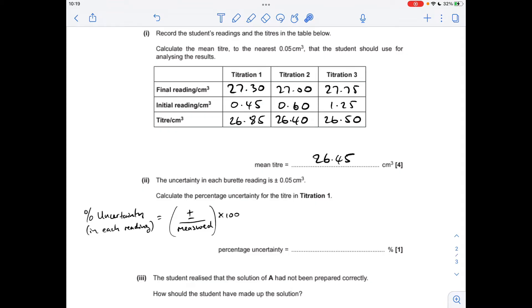Moving on to the percentage uncertainty. So here's the formula we use. Percentage uncertainty in each reading is the plus or minus value, which is always given, divided by what's been measured times 100. Now, this is a titra, so it's actually based on two readings. So the titra has two errors in it. So what we do is double that plus or minus value and divide it by the titra times 100. That's coming out at 0.37%.